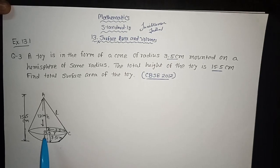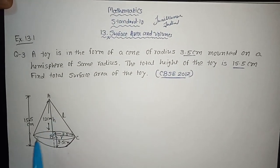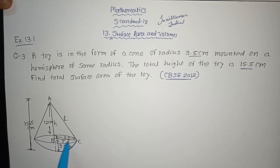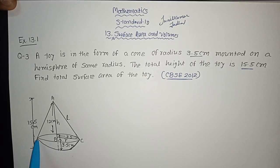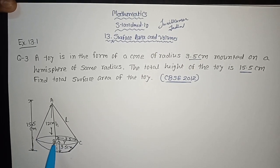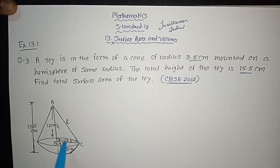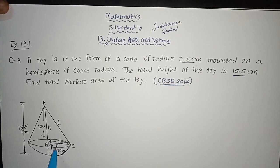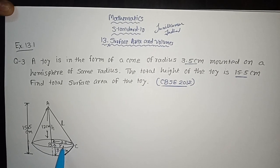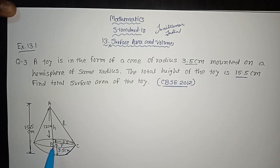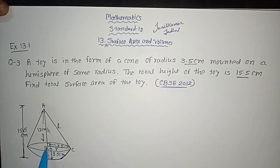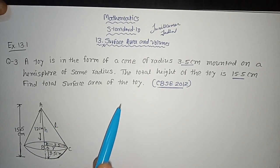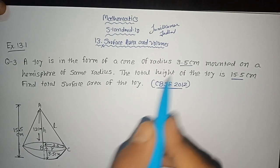Let us see here in the figure — you can see it is a cone that is mounted on the hemisphere. The radius of this cone as well as the hemisphere is the same, and that is 3.5 cm. Since it is a hemisphere, all the radii will be the same, so this will also be 3.5 cm.